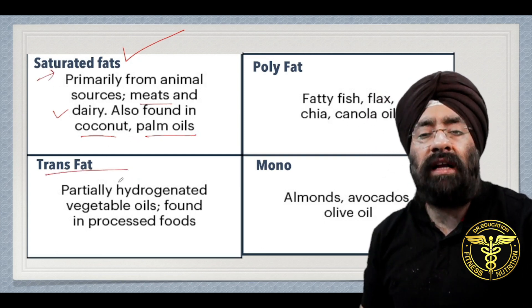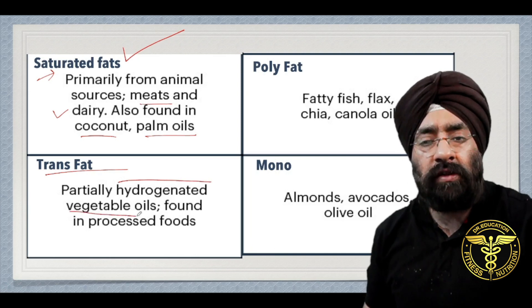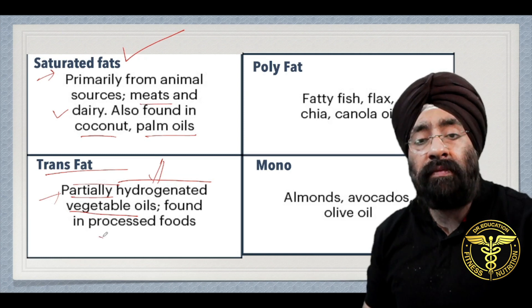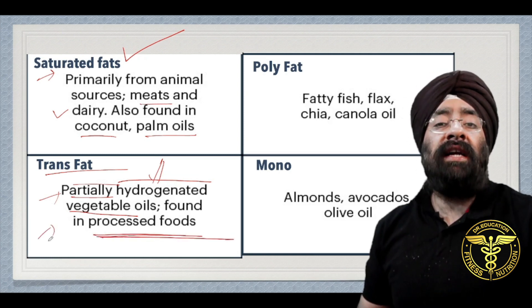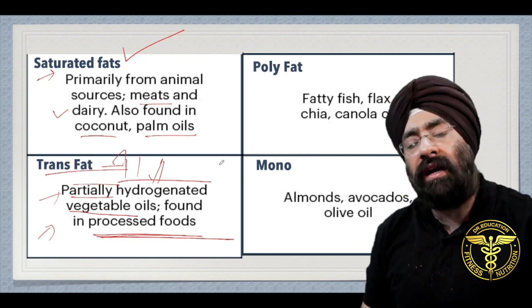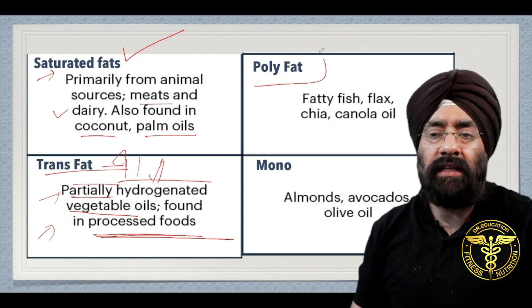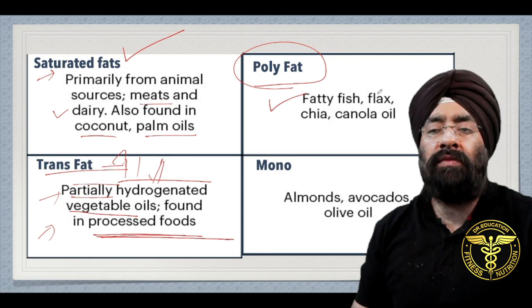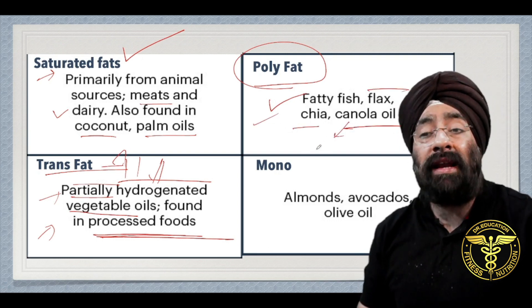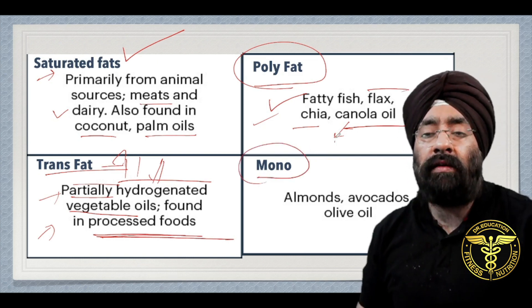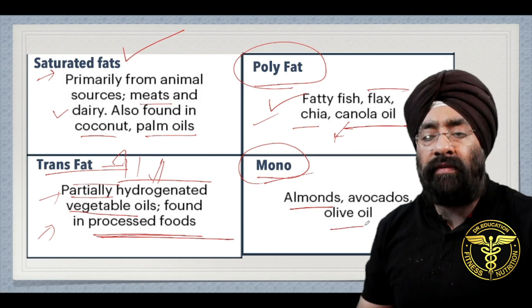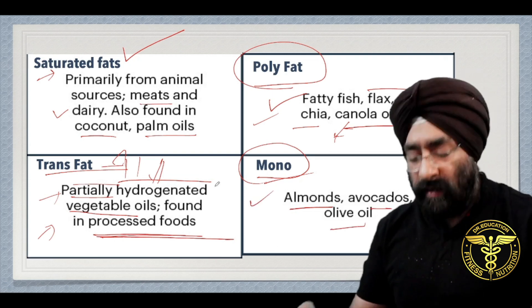Trans fats are produced at very high heat through hydrogenation and are found in processed food or outside food. These trans fats are very tasty. Polyunsaturated fats are found in fatty fish, flaxseed oil, chia seeds, and canola oil — these are good oils. Cold-pressed canola oil has also come to market, so you can take that. Monounsaturated fats are found in almonds, olive oil, and avocados.